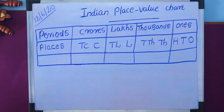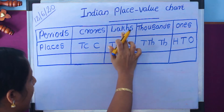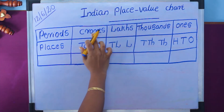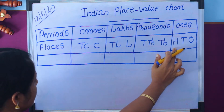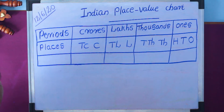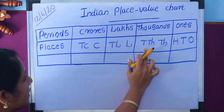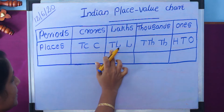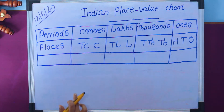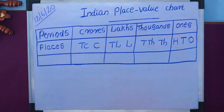Look at this Indian place value chart. The periods of the Indian place value chart are: ones, thousands, lakhs, and crores. The ones period is divided into three places: ones, tens, and hundreds. The thousands period is divided into two places: thousands and ten thousands. The lakhs period is divided into two places: lakhs and ten lakhs. The crores period is divided into two places: crores and ten crores.